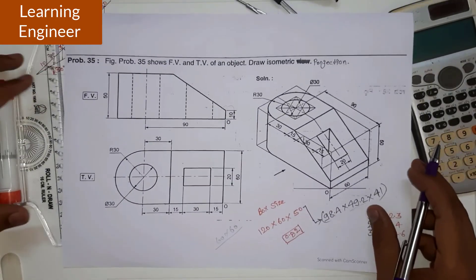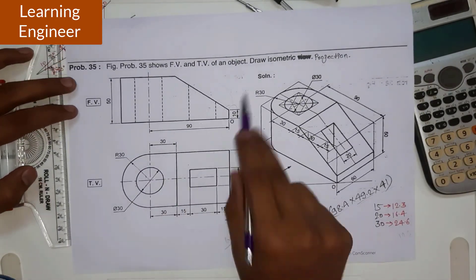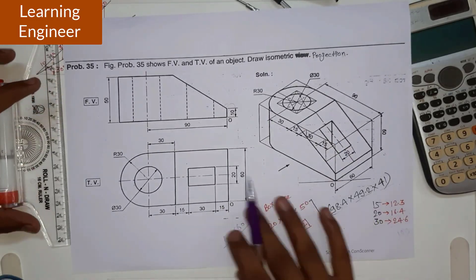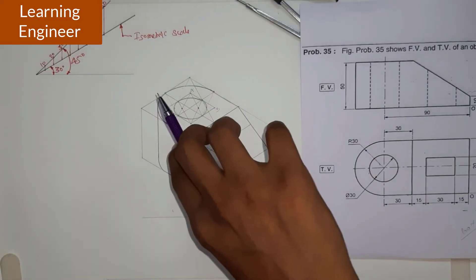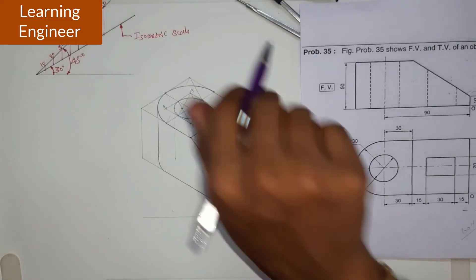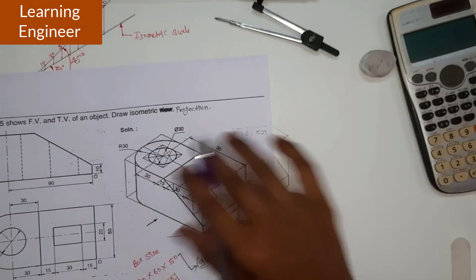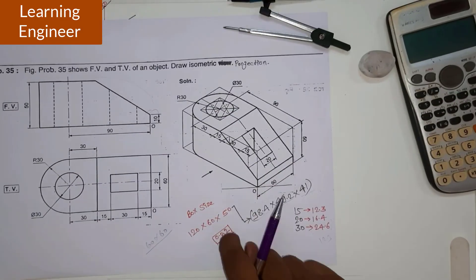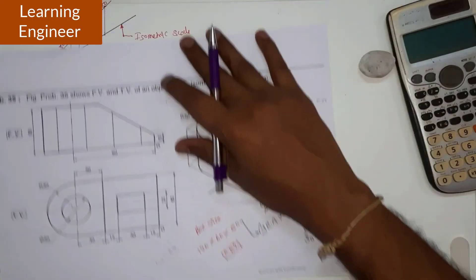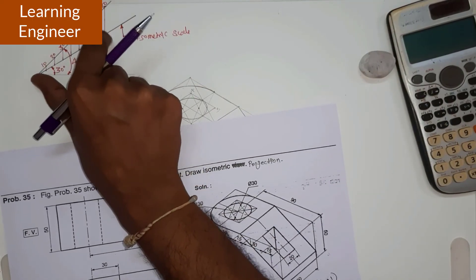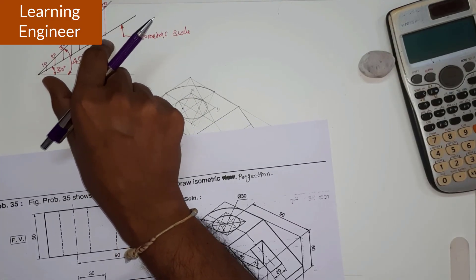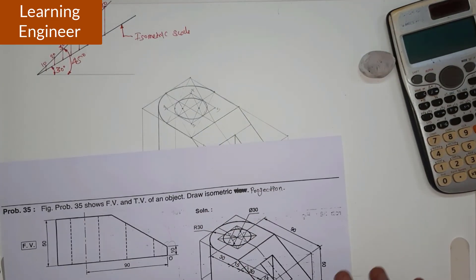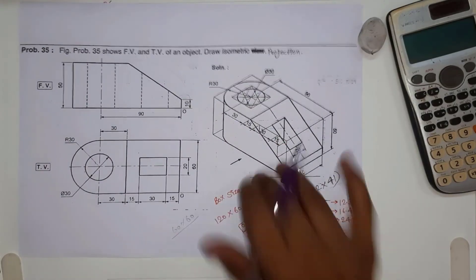This was the question given to us — from the front, end, and top views we had to draw the isometric projection. We first converted all dimensions using the isometric scale. If you want to locate a dimension like 120, you can use a scale as per requirement, or directly get the isometric scale by multiplying by 0.82. There are two options — you can use a scale or use the 0.82 factor — depending on which method you prefer.